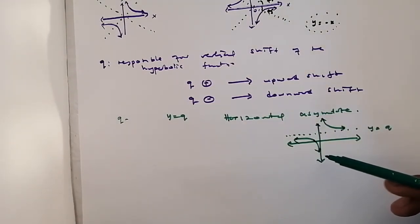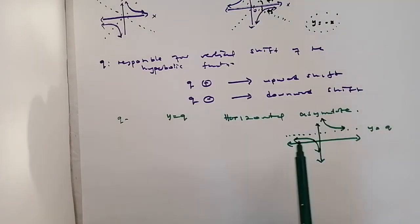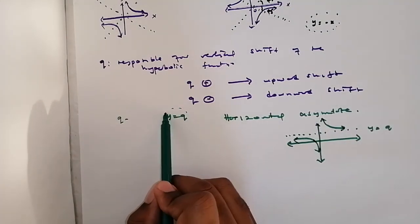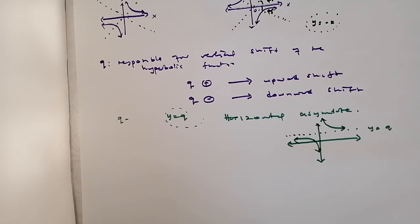So this graph is shifted Q units upwards. So an asymptote is an imaginary line that a function approaches but never touches. So Q is the horizontal asymptote.